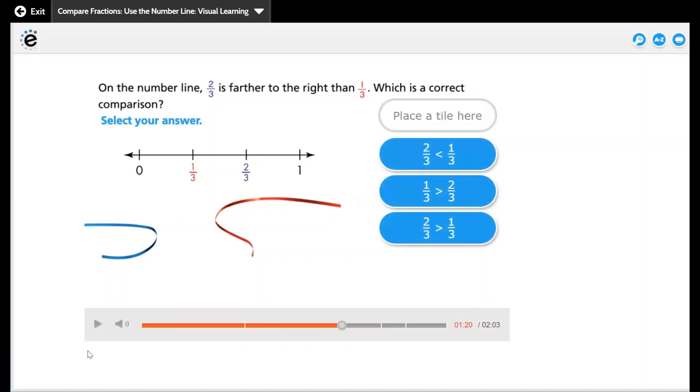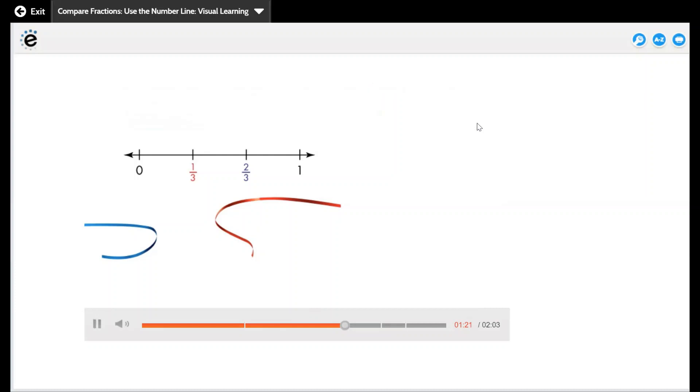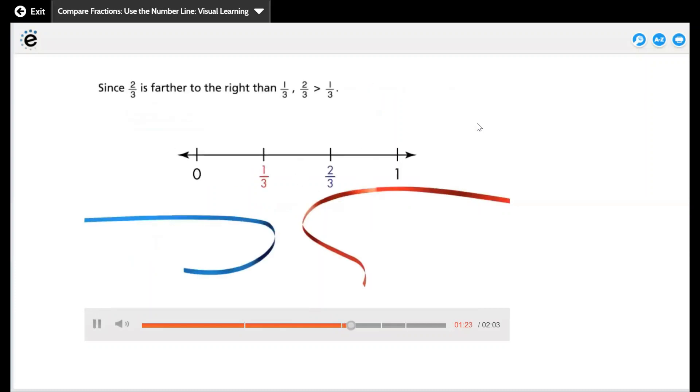Select your answer. So the fraction which is farther to the right means it's greater than the one on the left. So two over three is greater than one over three. Since two-thirds is farther to the right than one-third, two-thirds is greater than one-third.